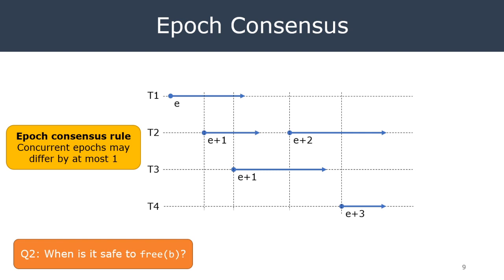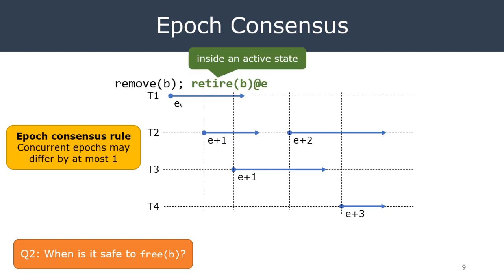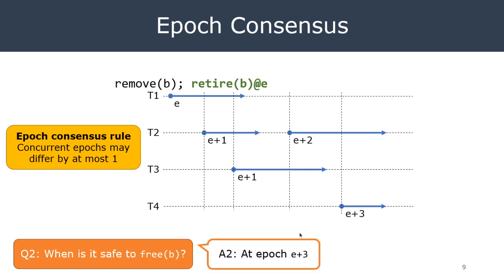After observing this consensus rule, it is easy to answer question two: when is it safe to free block B? Suppose block B is retired in an active state with epoch E. By assumption, all concurrent memory block accesses happen inside active states. This block B must be detached from the data structure and retired in an active state with epoch E. The answer to when it is safe to free B is: at an epoch E+3.